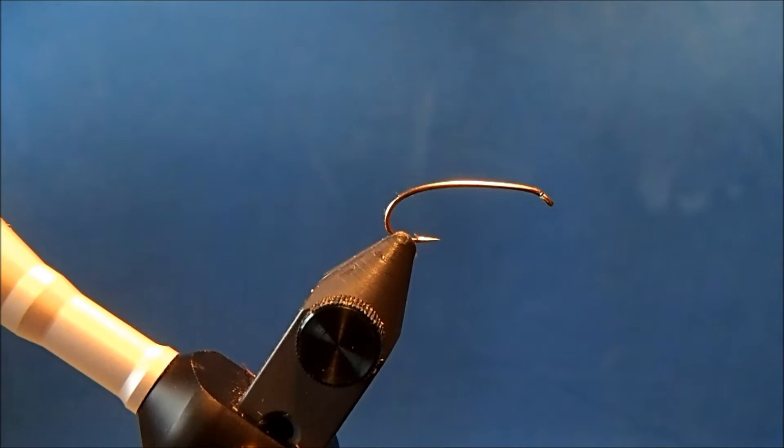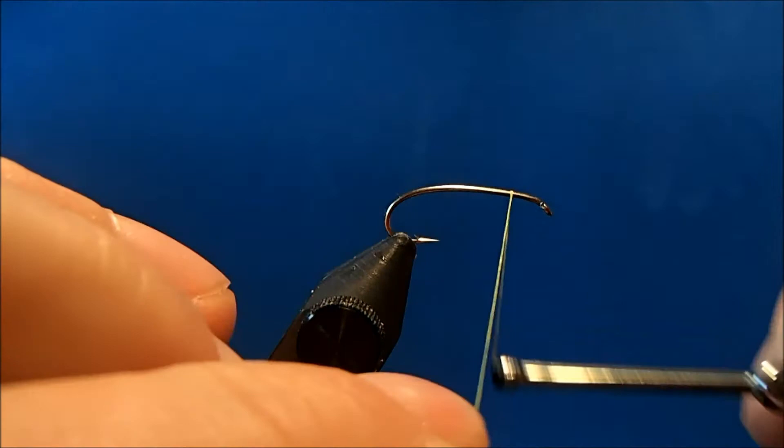I'm going to tie a LaTorte hopper and I'm starting off with a size 12 hopper hook in the vise, and the thread that I'm going to use is a six-aught yellow.